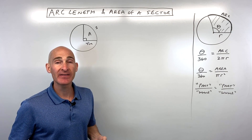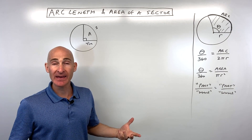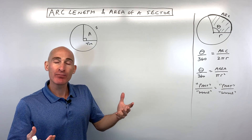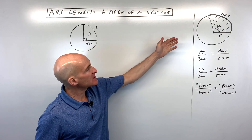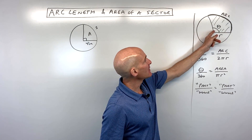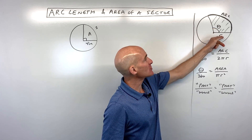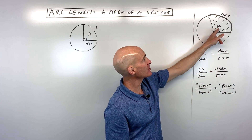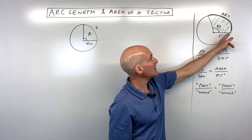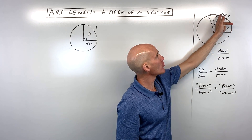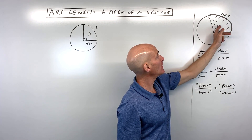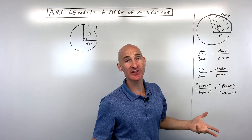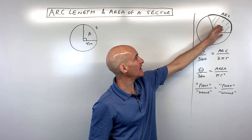In this lesson you're going to learn how to find the length of an arc as well as the area of a sector using proportions. We have a circle with a central angle where the vertex is at the center. We call this angle theta, and then we've got the radius. The arc is this curved portion of the circle, and the area of the sector is this pie slice or pizza slice.